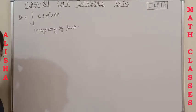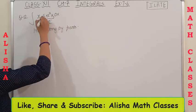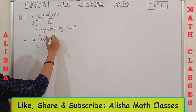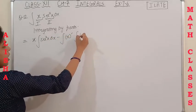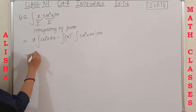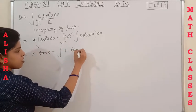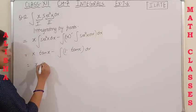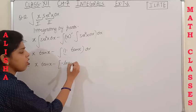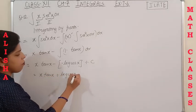Question 12 is the integration of x·sec²x. Using the ILATE rule, the algebraic function x is the first function and sec²x is the second function. Applying integration by parts: x·tan x − ∫1·tan x dx. The integration of tan x is −log|cos x|, or equivalently log|sec x|. So the answer is x·tan x + log|cos x| + C.